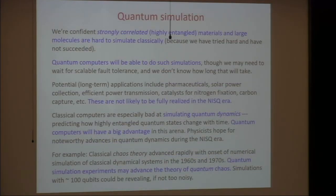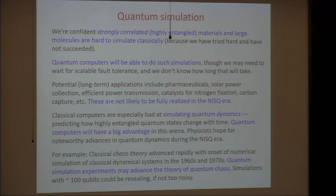The problem that we think quantum computers are especially well suited for is quantum simulation. We think simulating dynamics is particularly hard because people have tried to do it and are very bad at it. Quantum computers will be able to do simulations of quantum systems, with potential applications that could have a profound impact — perhaps not in the NISC era — on human health, agriculture, and the sustainability of the planet. Because classical computers are particularly bad at simulating dynamics, that seems to be a great opportunity for quantum advantage. Back in the 60s and 70s, when people started to simulate nonlinear classical systems using classical computers, that greatly advanced our understanding of chaos in classical dynamical systems. We don't really know very much about quantum chaos yet, but with quantum simulations we might be able to learn about it relatively soon.